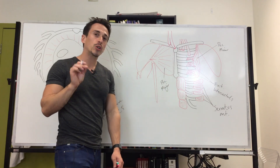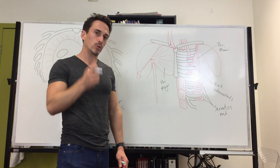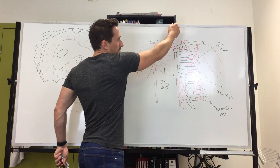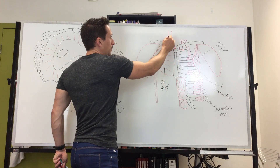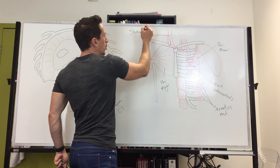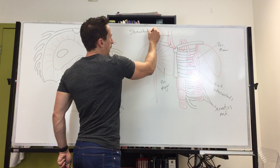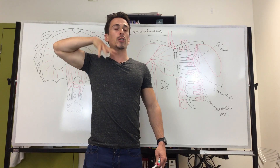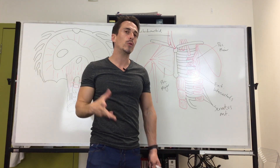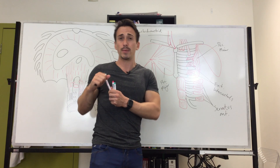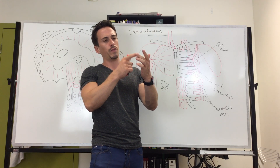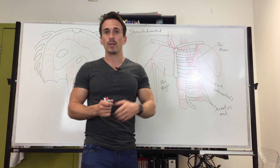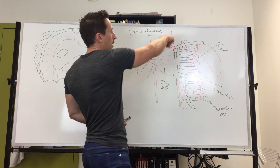The sternocleidomastoid — a large strap-like muscle — attaches to the clavicle and sternum. When it contracts it lifts everything up and out, increasing thoracic volume. It is innervated primarily by cranial nerve 11, the spinal accessory nerve.